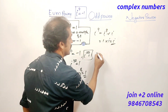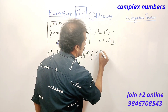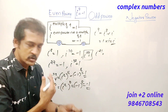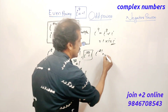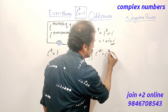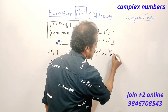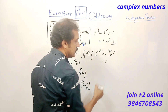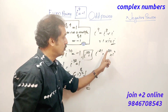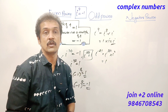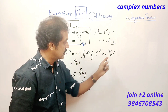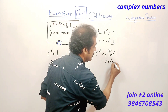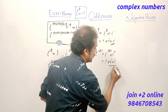Let's start. i raised to 20 — i raised to 20 is 1 because 20 is a multiple of 4. Therefore the answer is 1 into i, and the answer is i.